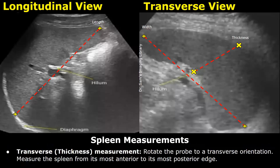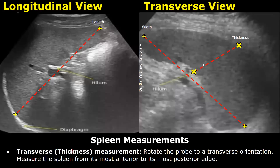To measure the thickness of the spleen, place one caliper at the anterior margin of the spleen and the second caliper at the posterior margin, and you will get the splenic thickness. Take this measurement at approximately the center of the spleen, from the point where you see the hilum all the way to the other edge.